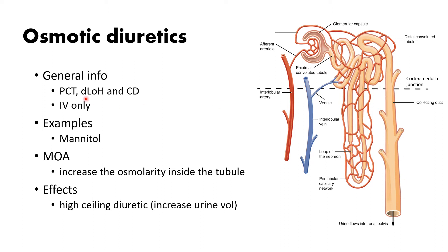Anywhere where there's high water permeability in the nephron. These agents are IV only — they are not orally absorbed. Examples include mannitol, which is the most common one.